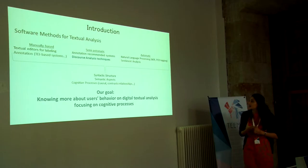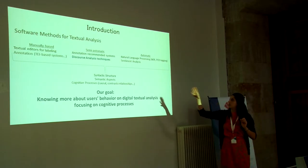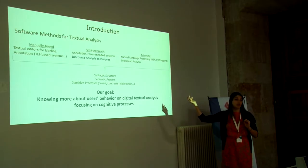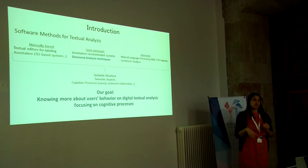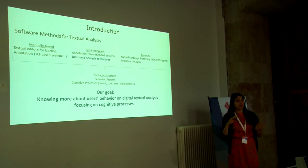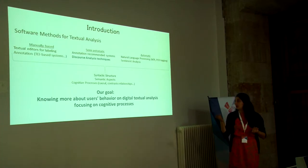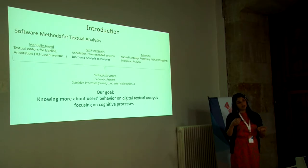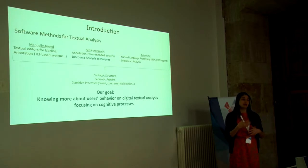Our main idea is that we need to identify, whether manually or automatically, the syntactic structure of the text, the thematic aspects, but also cognitive processes — for instance, whether there is causal reasoning inside the text, or argumentations in terms of contrast. This is very important in research, mainly in humanities, because studies show that in historical analysis, the main ideas revolve around causal relationships in the text.